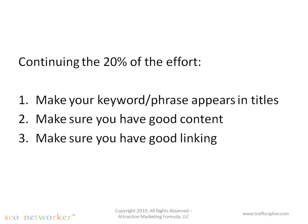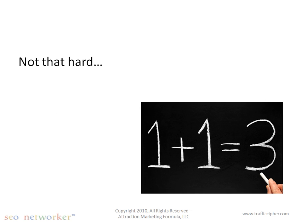What you want to do now is continue the 20% effort we outlined and started in the Traffic Cipher report. The remaining 20% effort is going to get you 80% of your results. Pretty simple — three simple steps broken down for you. One, make sure your keyword and key phrase appears in your titles. Two, make sure you have good content. And three, make sure you have good linking. Those three steps — it's simple math.